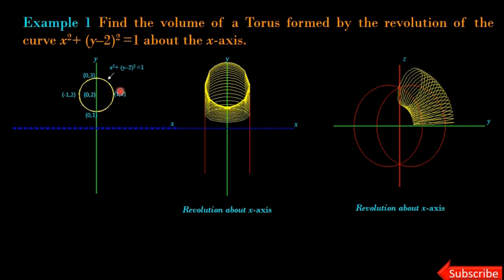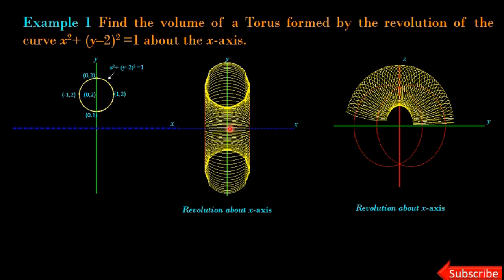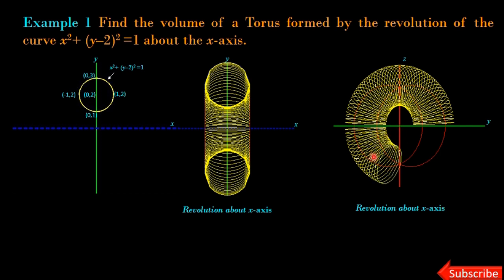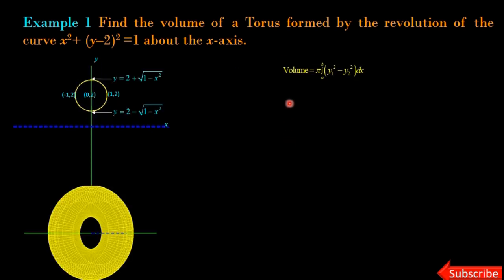Now we revolve this circle about the x-axis. We are looking at two different views of the revolution about the x-axis. In the first view the z-axis is outside the screen, similar to the two-dimensional xy-plane. In the second view, the x-axis is outside the screen and we see the zy-plane, where we can clearly see the shape of the solid, which is a torus. This is the wire form and this is the solid form of the torus.